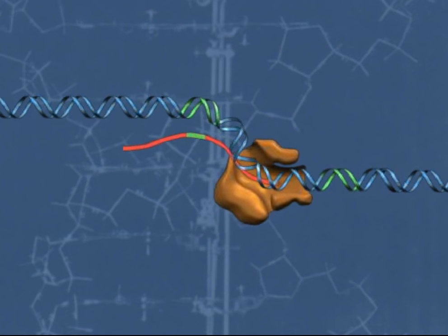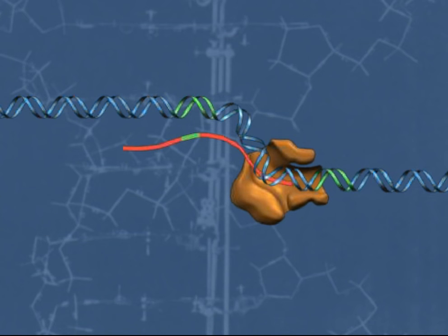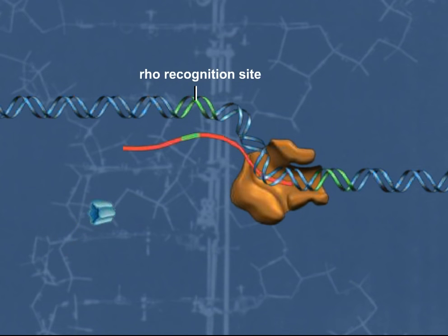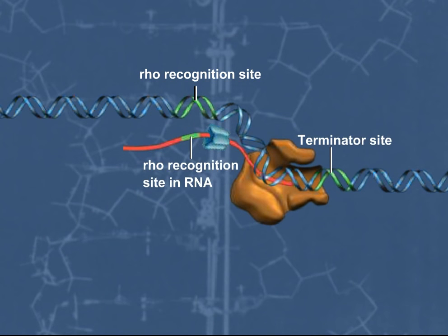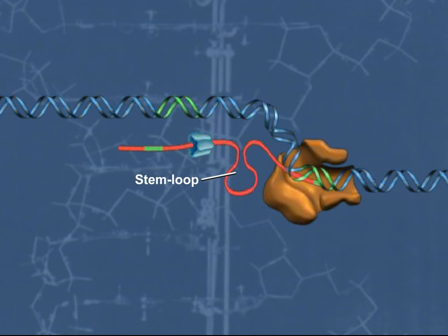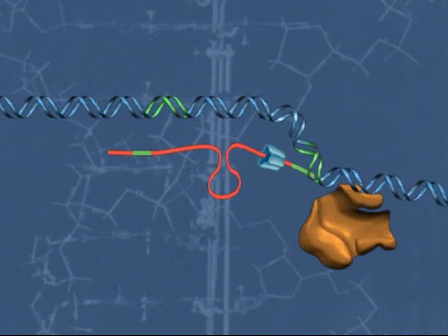One mechanism of bacterial transcriptional termination involves the binding of the rho protein to the RNA. It is a helicase that moves in the 5' to 3' direction toward the RNA polymerase. Between the rho recognition site and the terminator site, a stem-loop structure is formed by the sequence in this region. This stem-loop structure halts the movement of RNA polymerase, and the rho protein then moves to the RNA polymerase complex, causing the complex to dissociate and terminating transcription, resulting in the full-length mRNA transcribed from the gene.